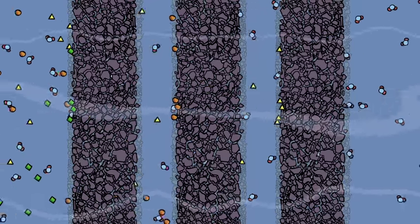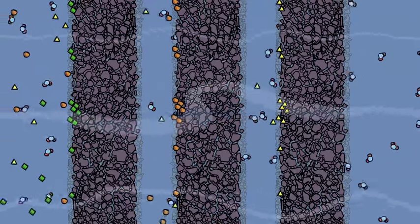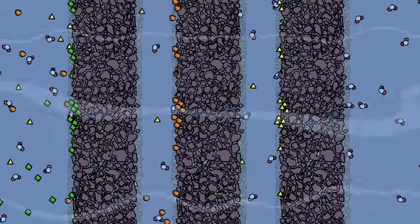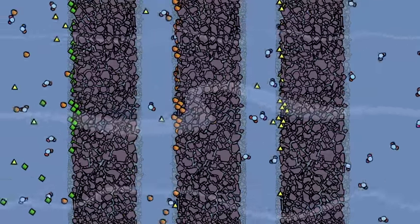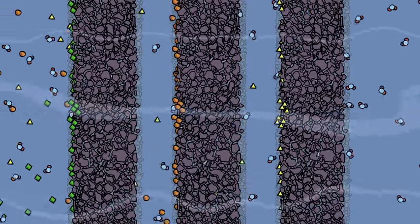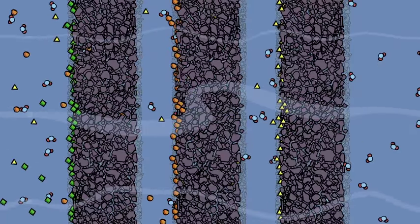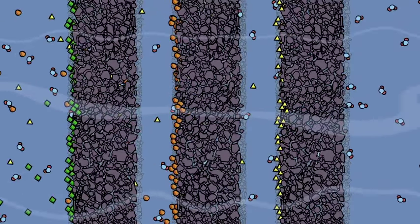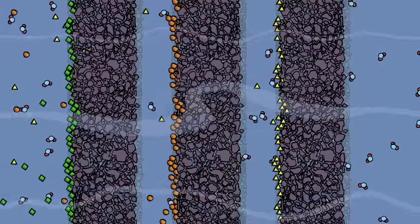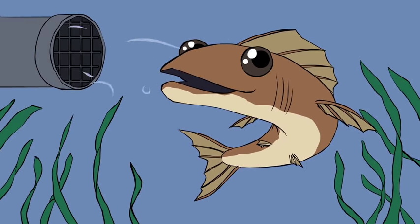Speaking of runoff, adsorption can be used to remove chemicals and pollutants like excess fertilizer from wastewater before releasing it back into the water supply. Different filter materials adsorb different impurities and chemicals, leaving the output clean. Fish love adsorption.